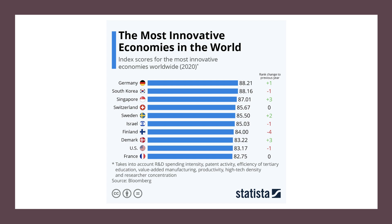There is an international league table published each year on the most innovative countries, taking into account research and development spending, the degree to which countries successfully win patents, the efficiency of tertiary education, high-tech density, and other factors. Germany, South Korea, Singapore, and Switzerland came out as the top four countries in the innovation scorecard for 2020. Israel and Finland also appear, and are interesting because they have some of the highest R&D spending levels in the world measured as a share of GDP.